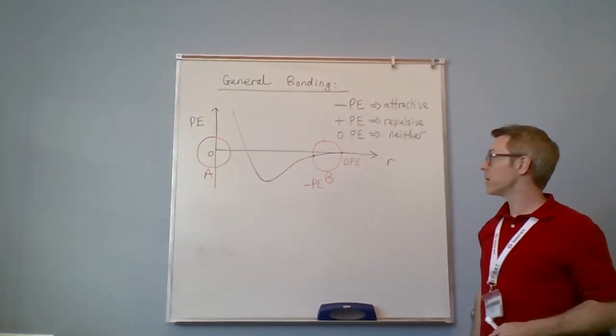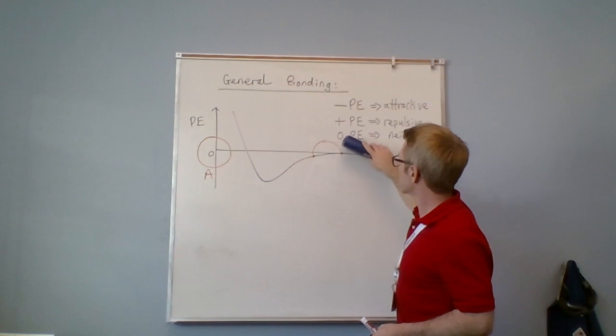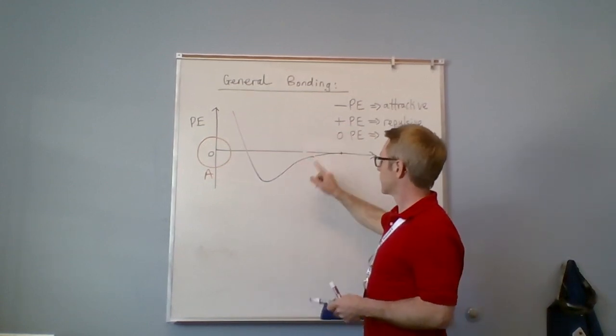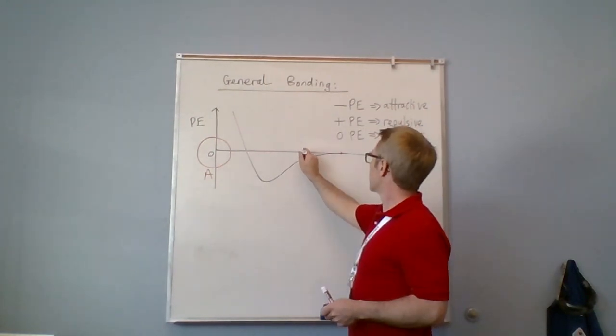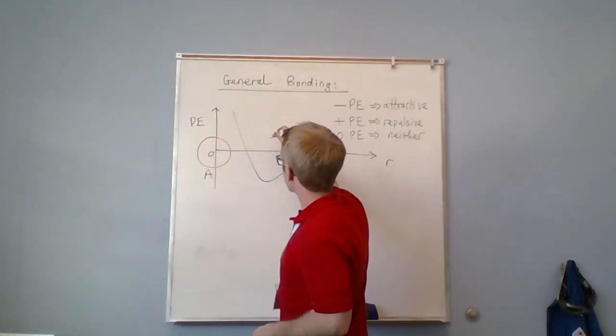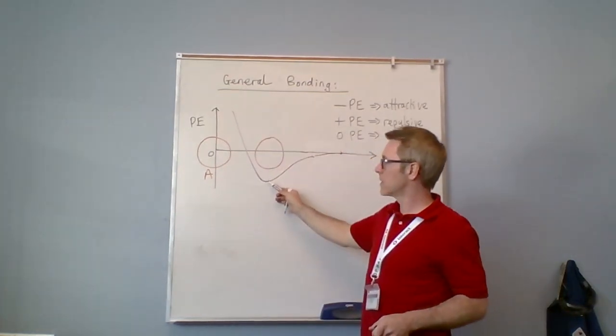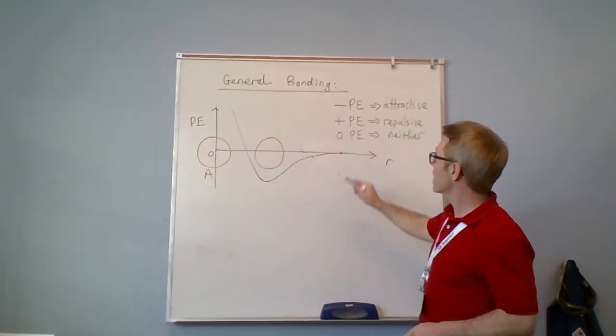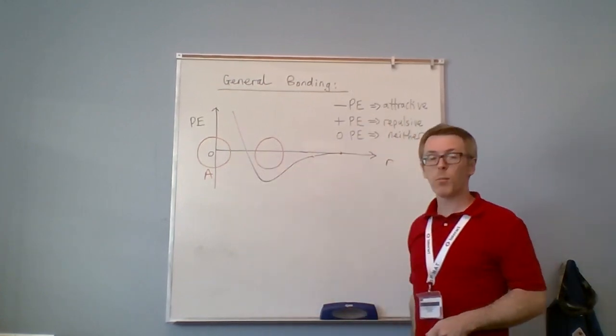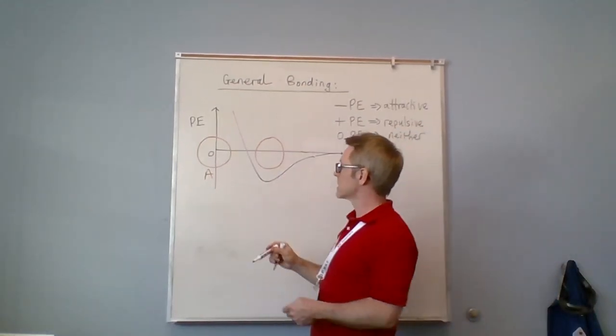So let's imagine now this object gets further along again. Let's imagine the object is here, exactly hovering over this lowest part of the graph which is the most negative value. So it's the most attractive part of the graph. That means that at this distance, wherever this distance is here.